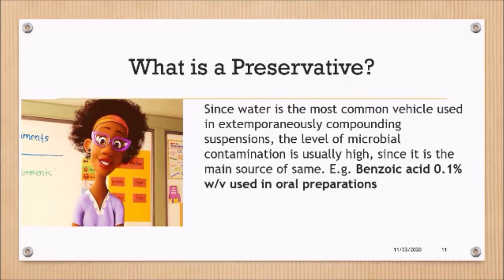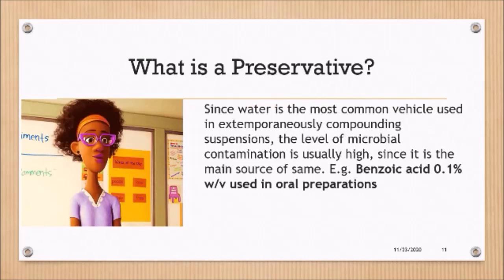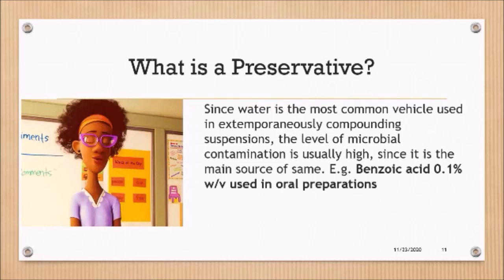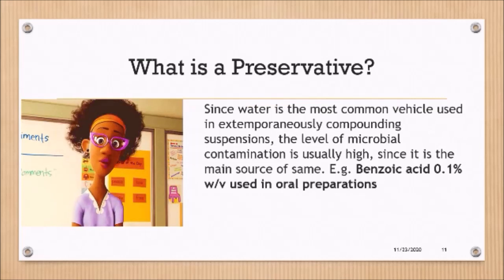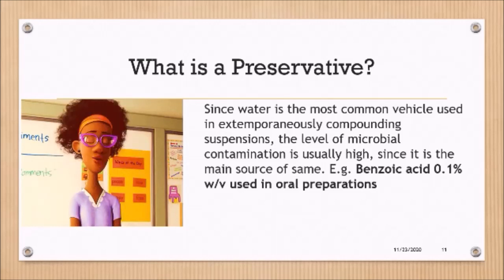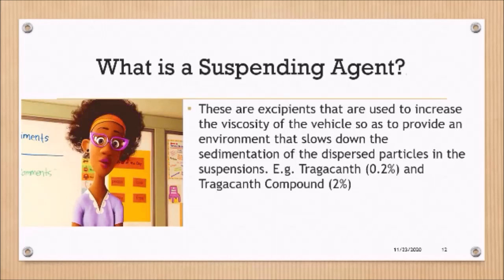A preservative lowers the bacterial load within a formulation. Examples used in oral suspensions include benzoic acid at 0.1% weight-in-volume in the final formulation, which is normally used for oral preparations. There are also the parabens — methyl and propyl parabens — which are used in both oral and external preparations. We will focus on benzoic acid; you need to know its concentration of 0.1%. The suspending agent confers viscosity to the vehicle.